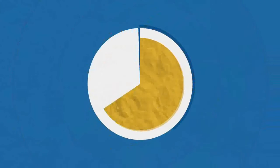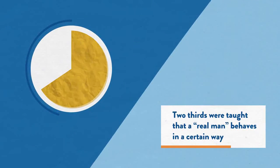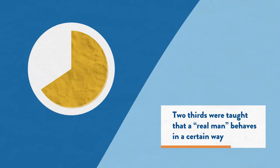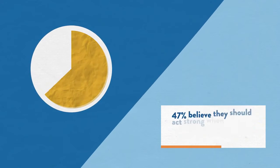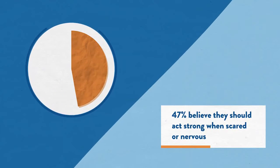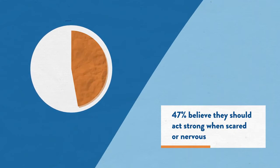When asked about these rules, two thirds of those surveyed said they were taught a real man behaves a certain way. 47% believe they should act strong, even when scared or nervous.